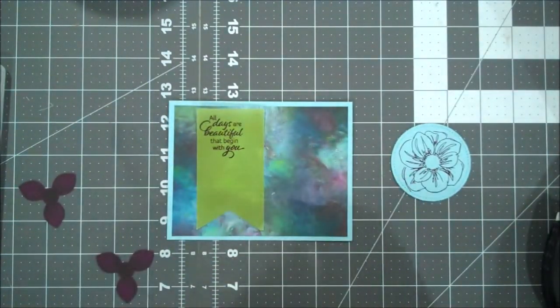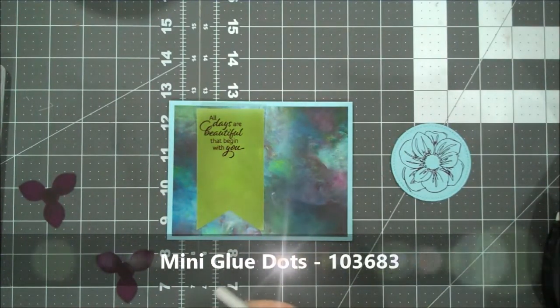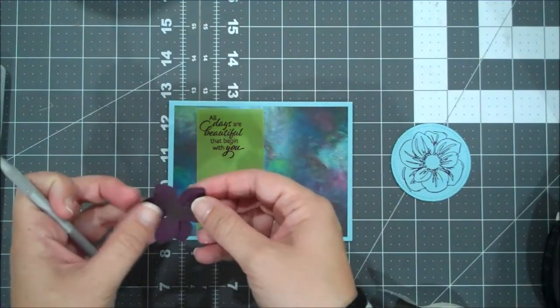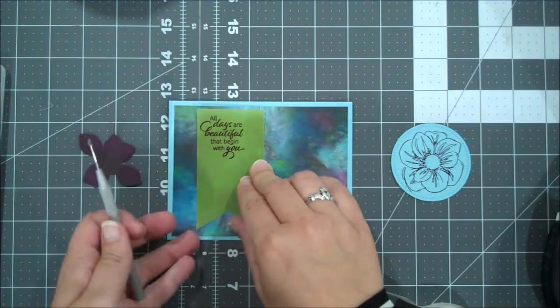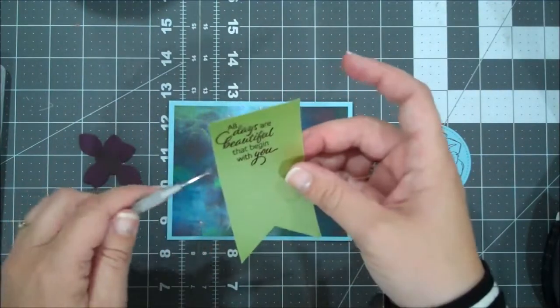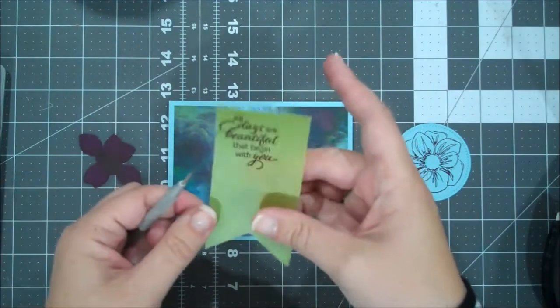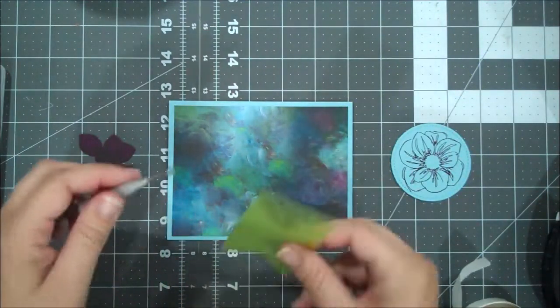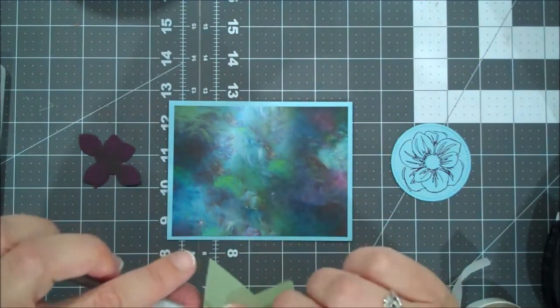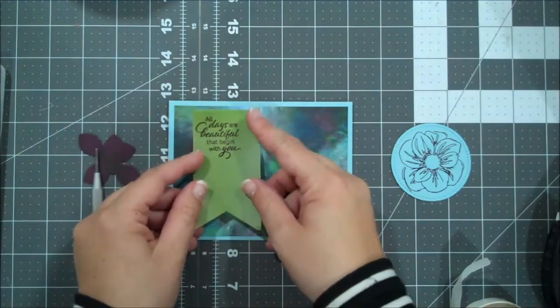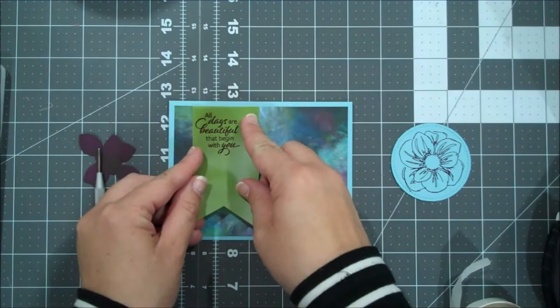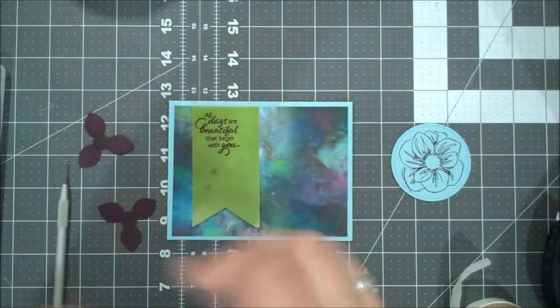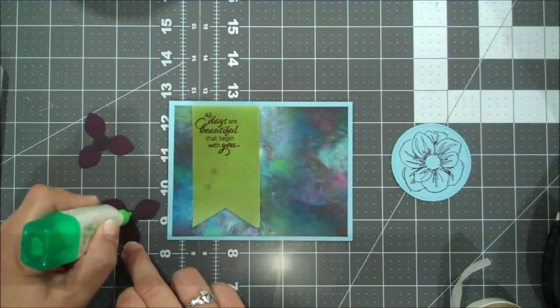So with the vellum, you will see the adhesive if you don't position it carefully as to where you'll hide it with something. So we're going to put some adhesive behind the vellum where our flower is going to go. So I'm going to put a few glue dots. And then we're going to line this up flush with the top of that layer.